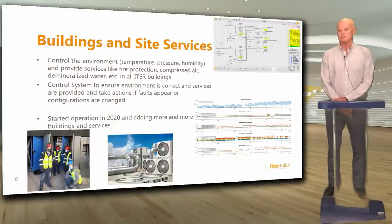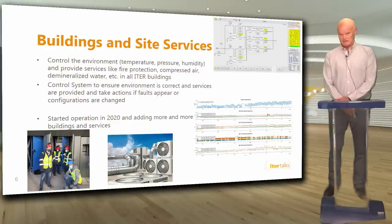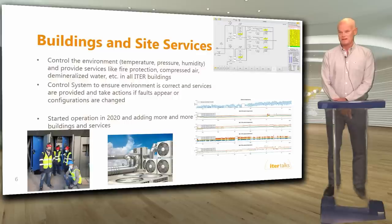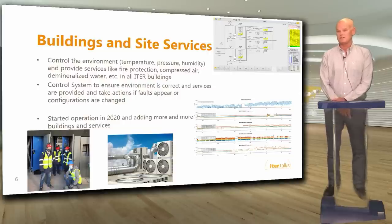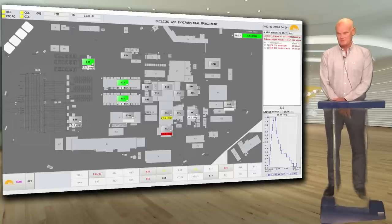Next we have buildings and site services. We need buildings to install the systems and to control the environment — temperature, pressure, dust — and we need to provide services like fire protection, compressed air, gases and water to clients. The control system ensures the environment is correct and services are provided. Pictures show commissioning activities, an HVAC unit, a screenshot of demineralized water production, and six months of temperature data to verify correct functioning of environment control. The overview HMI in the control room indicates each building by traffic light, and we can see we are not as advanced with this system — many more buildings still need to be integrated.